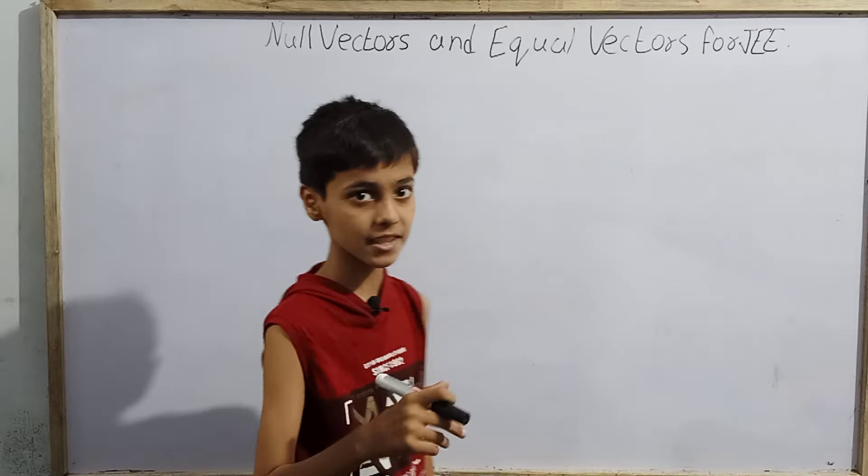First we'll understand what is a null vector. Null vectors are also known as zero vectors. The original name is null vectors, but they are also called zero vectors. There should be a reason for that — why zero, and why not another number? We are going to discuss the main reason behind that.